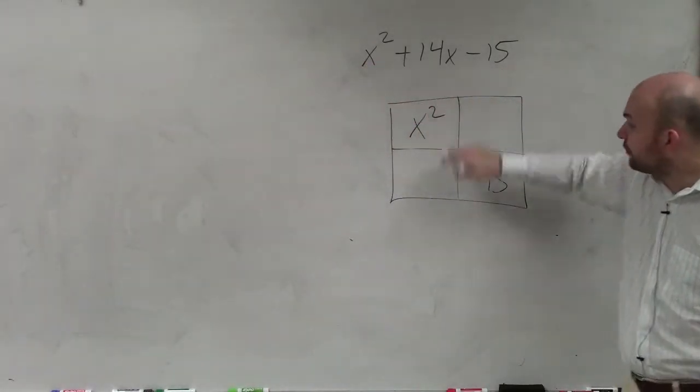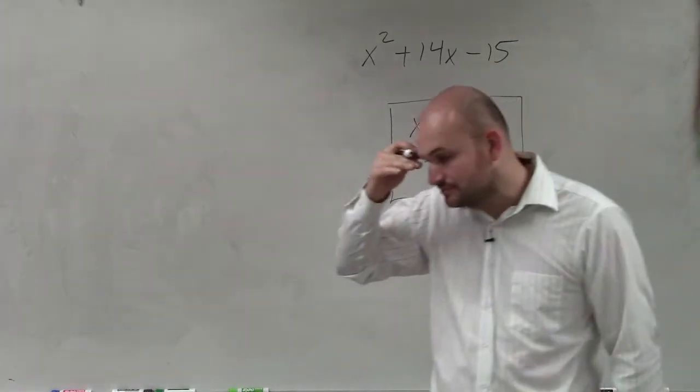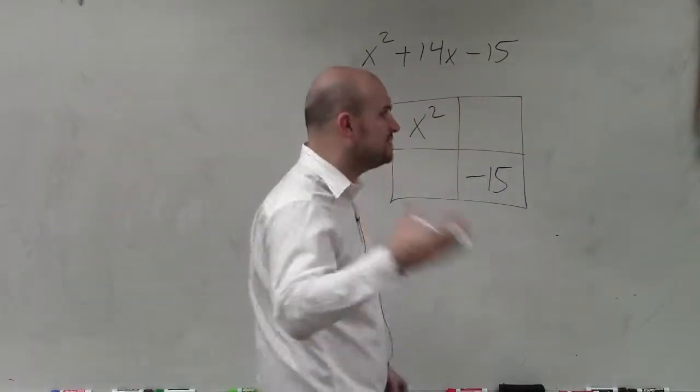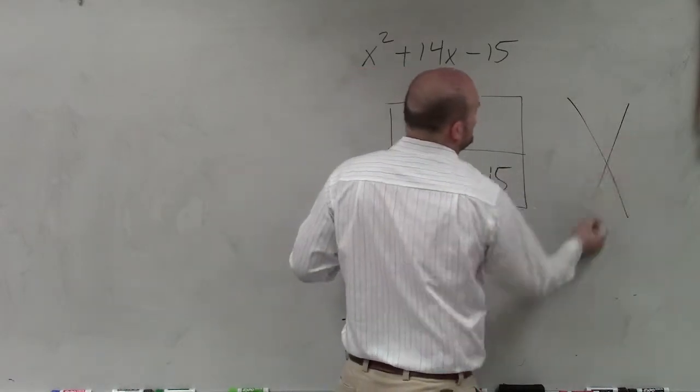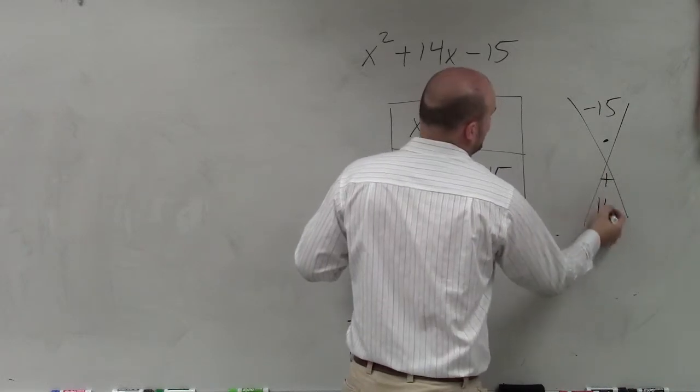Now I need to break up 14x between these two boxes. But I need to think through this. I don't want to be randomly choosing numbers. So I'm going to say what two numbers multiply to give me negative 15, but then add to give me 14.